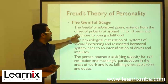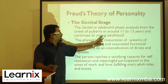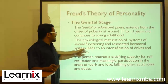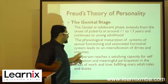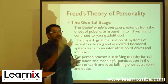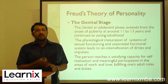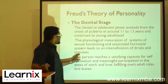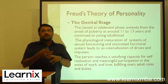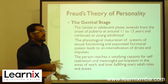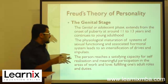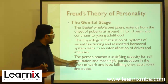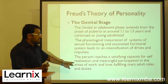The next phase is called the genital phase, which extends from the onset of puberty around age 11 to 13 and continues into young adulthood, around 20 to 24 years. The psychological maturation of sexual functioning and associated hormonal systems leads to an intensification of drives and impulses. This explains why teenagers can seem hard to control — they are experiencing intensified drives, feeling as though they can take on the world, yet they are still in the learning process and haven't fully developed.